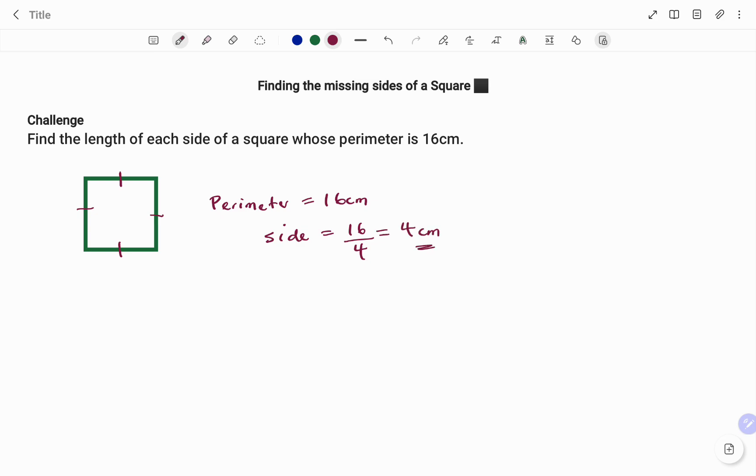So, for this challenge question, all the sides of the square are 4 centimeters. Thanks for watching. Bye.